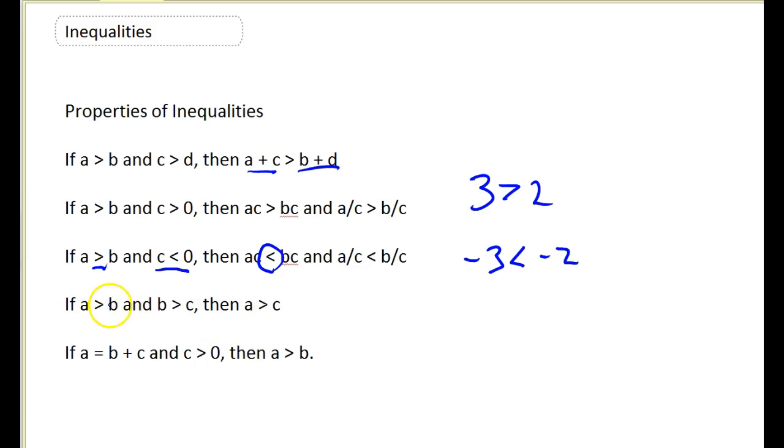Two more. If A is bigger than B and B is bigger than C, then A is bigger than C. That's kind of like a transitive property of inequality. And then finally, if I have to add two numbers together to equal A and C is positive, then A is definitely bigger than B.